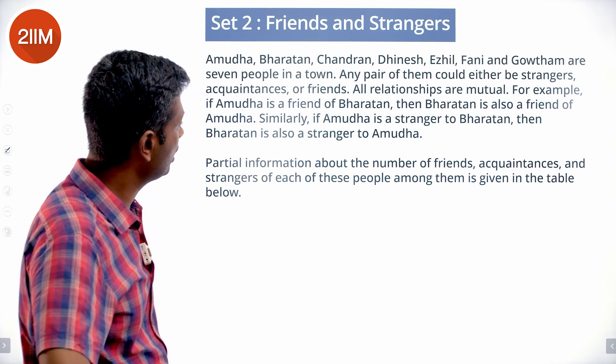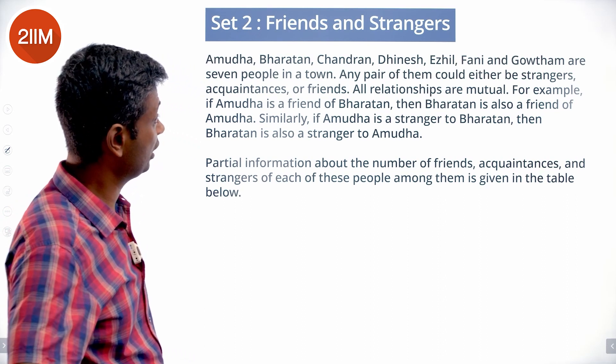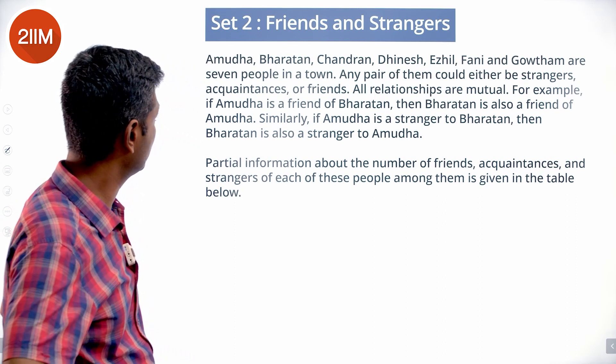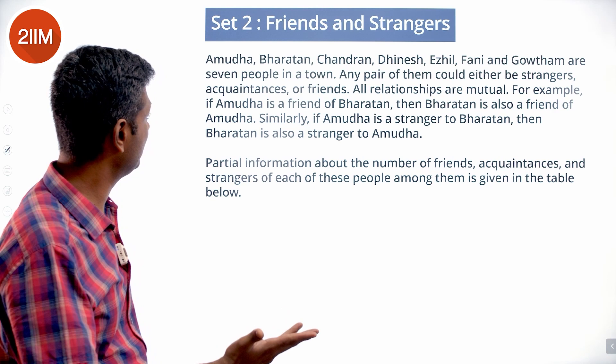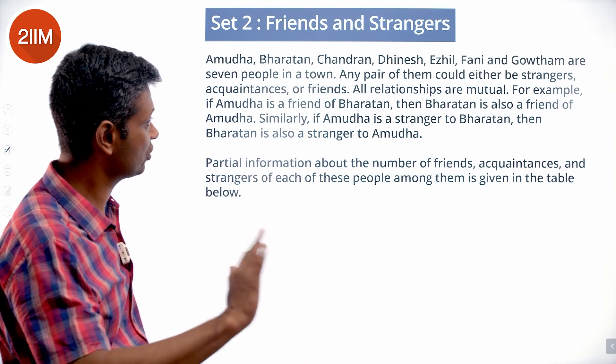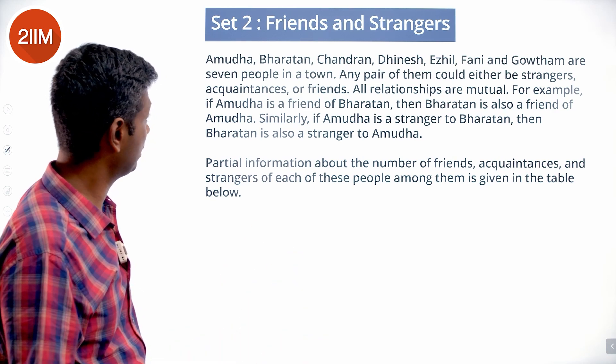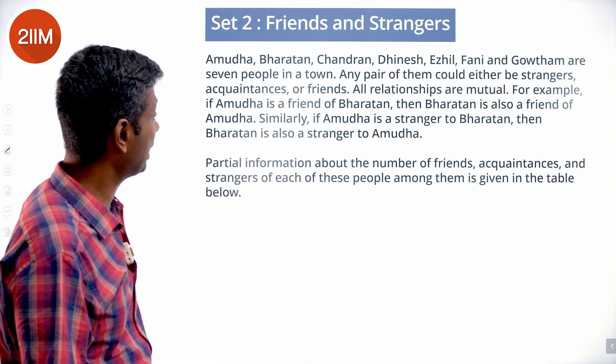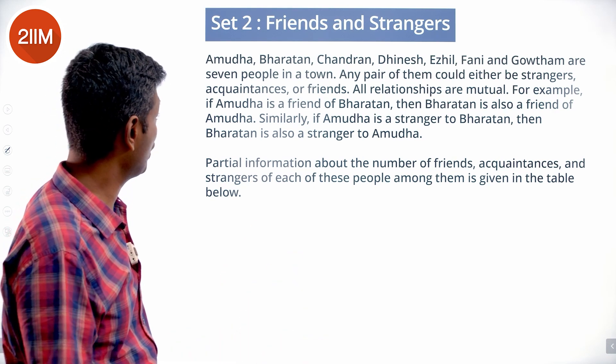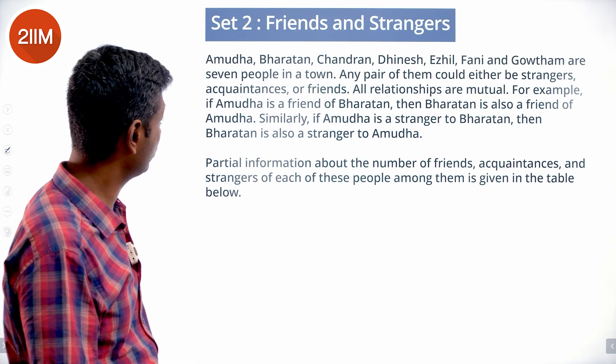Amudha, Bharatan, Chandra, Dinesh, Israel, Fani, and Gautam — that is A, B, C, D, E, F, and G. Seven people are in a town. Any pair of them could either be strangers, acquaintances, or friends.